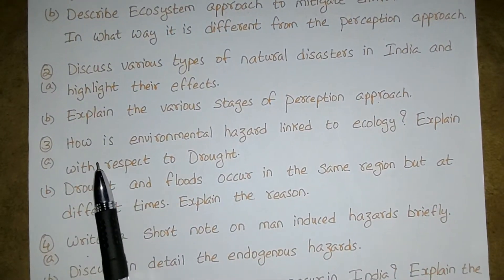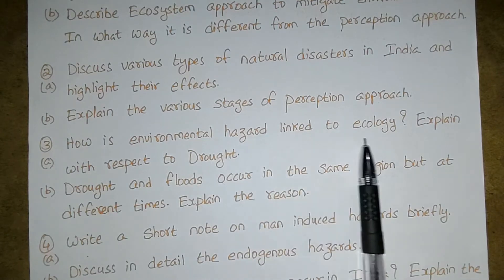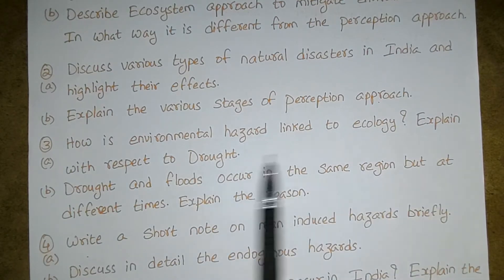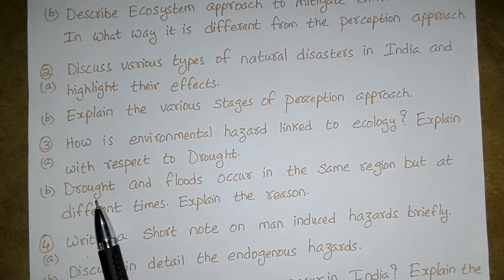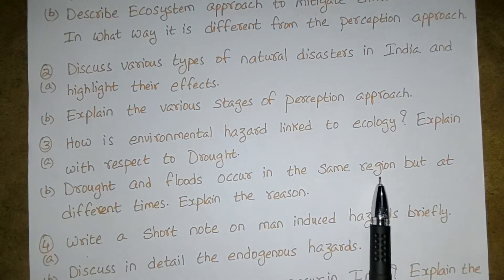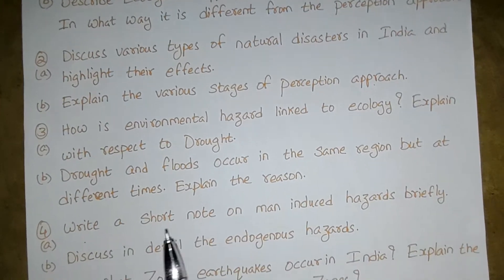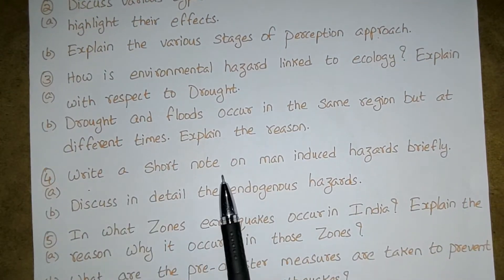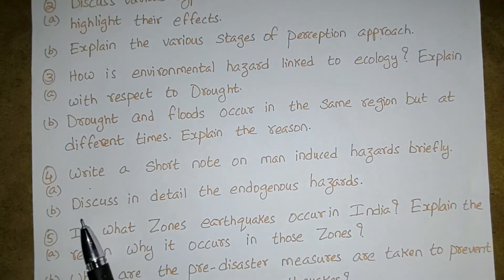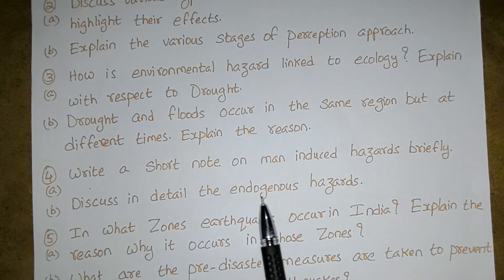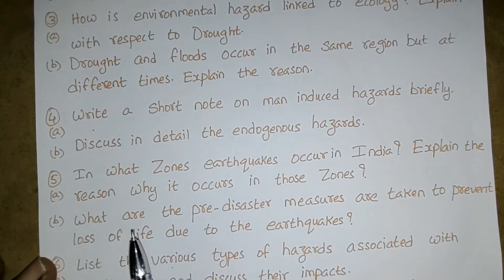Third question (a): How is environmental hazard linked to ecology? Explain with respect to drought. Third question (b): Drought and floods occur in the same region but at different times — explain the reason. Fourth question (a): Write a short note on man-induced hazards. Fourth question (b): Discuss in detail the endogenous hazards.